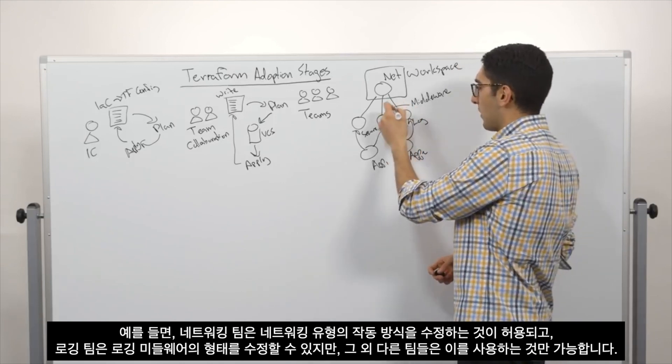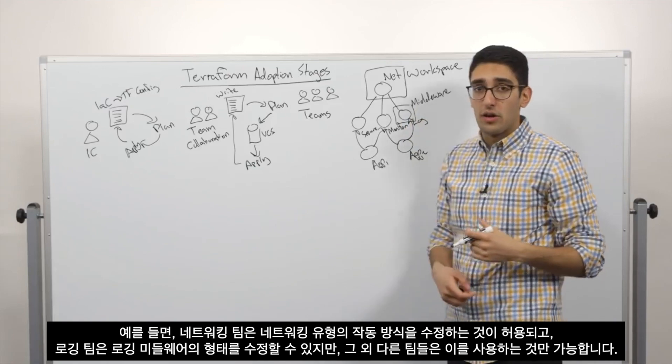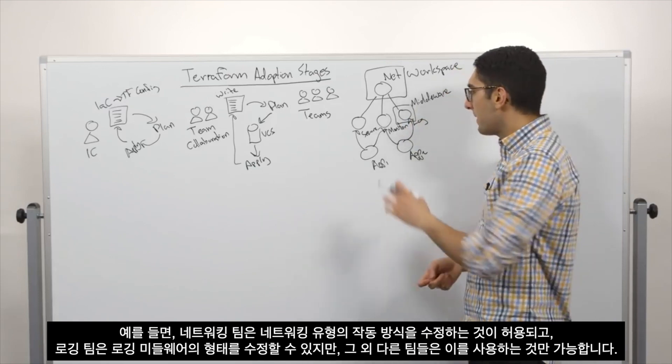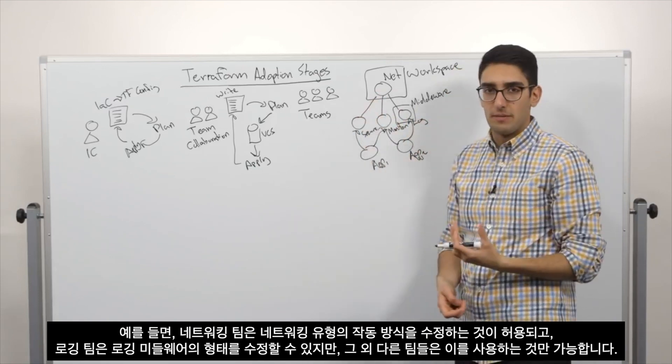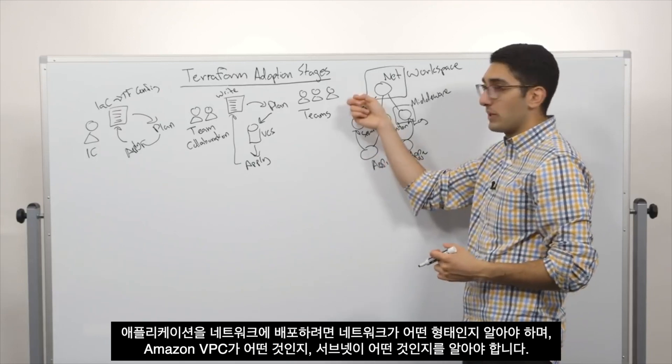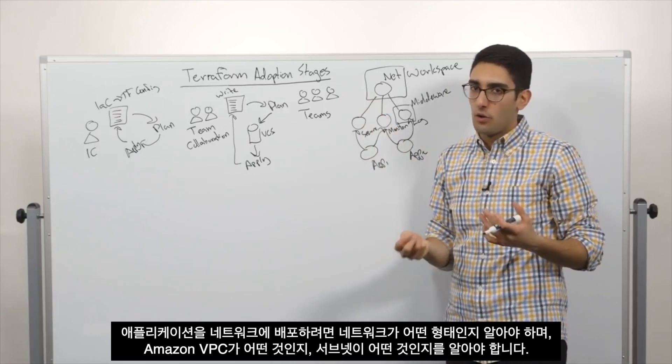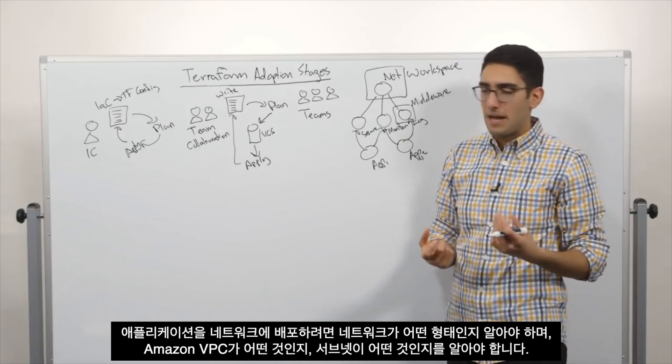So we say the networking team, they are allowed to actually modify how the networking topology works. And maybe our logging team is allowed to modify what our logging middleware looks like. But these other teams, they're all consumers of it. My application has to be deployed into a network. So I need to know what the network looks like. I need to know what's my Amazon VPC, what's my subnet.